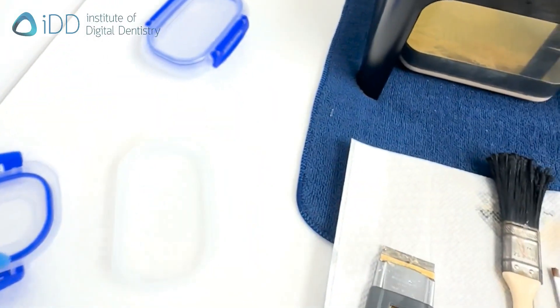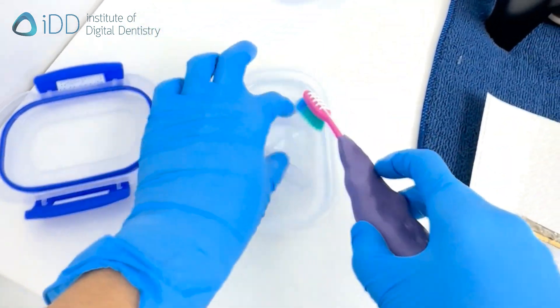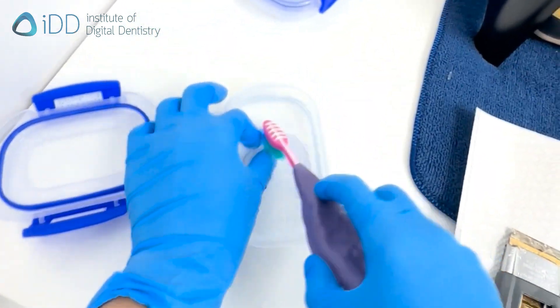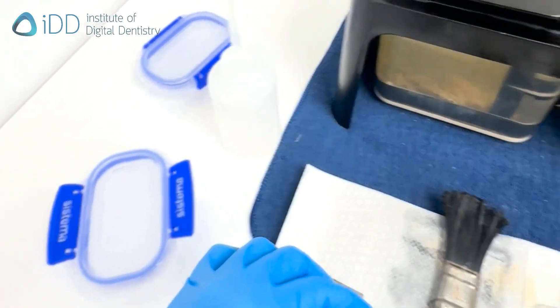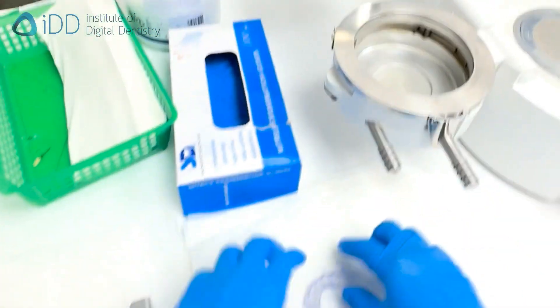After this is all done, put the splint in a container with isopropyl alcohol and brush off any of the excess resin. Let the splint soak in there for about five minutes, then take it out and let it air dry.